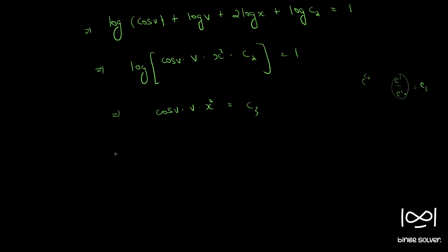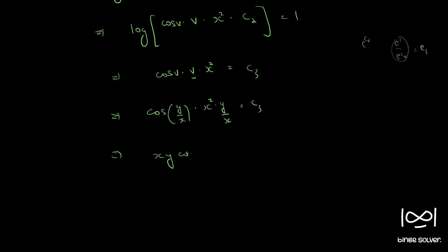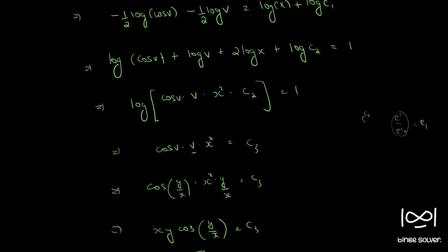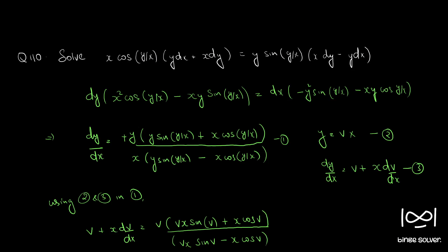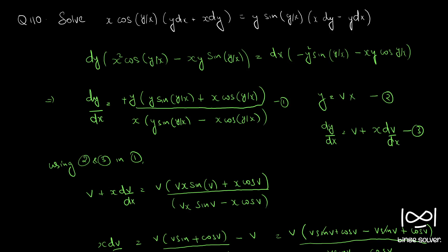So we know v equal to y/x. So cos(y/x) times y/x times x squared equal to c3, or x times y times cos(y/x) equal to c3. This is the solution to question number 110.